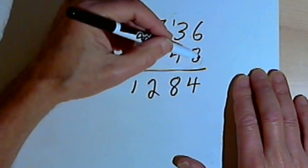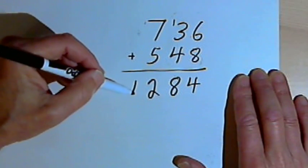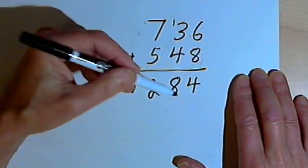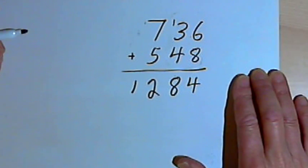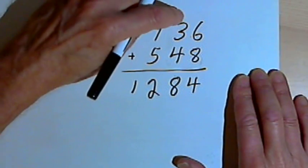Even though I moved from right to left, when I read the answer, I read the answer from left to right, 1,284. So left to right addition is a way of doing the addition in the same order that I'm going to read the answer in. And here's how it works.